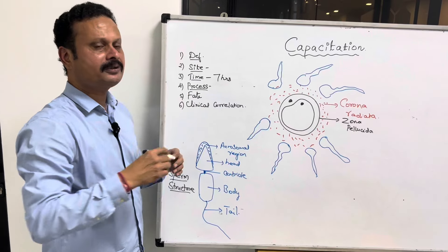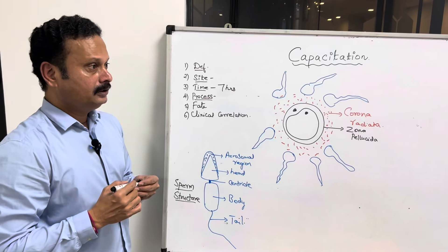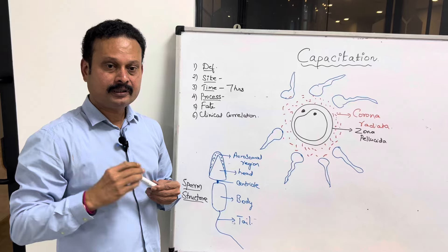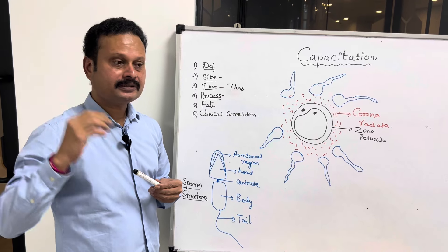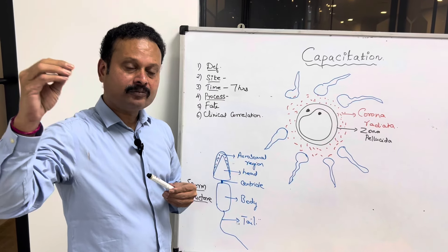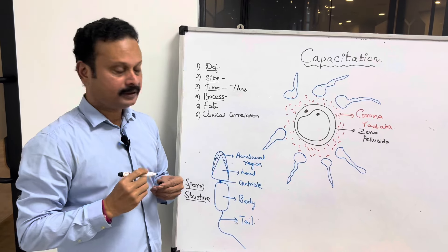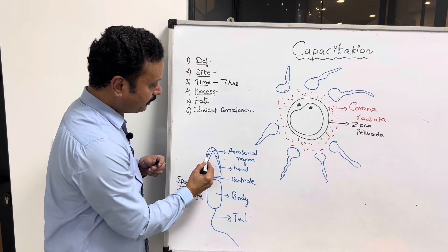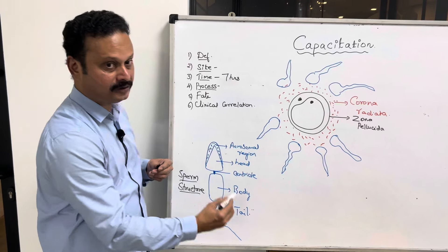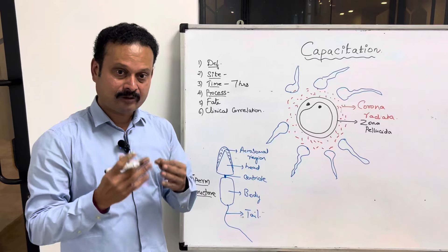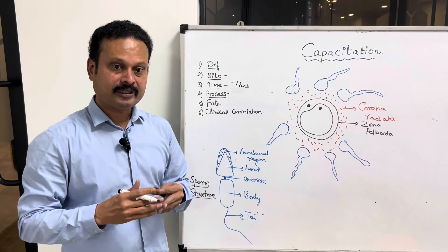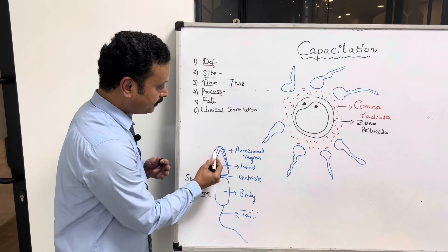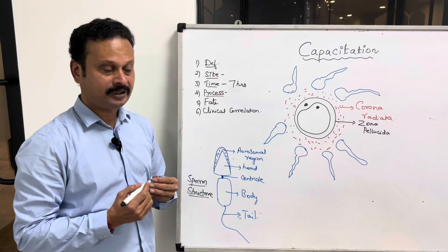Process: what is the process of capacitation? It is a process where the glycoprotein coat and the seminal proteins are removed from the plasma membrane that overlies the acrosomal region of the spermatozoa.